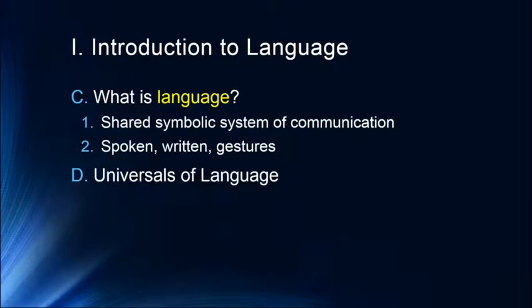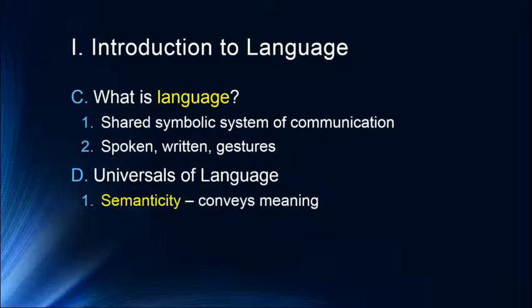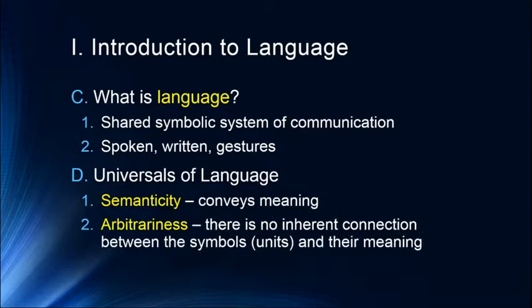Each language has some universality to it. All language has what we call semanticity — that is, it conveys some sort of meaning. Language is designed to intentionally convey meaning from one person to another. Language is also inherently arbitrary; there is no inherent connection between the symbols and their meaning. As Shakespeare famously said, a rose by any other name would smell as sweet. So 'rose' is simply arbitrary, and anyone who has studied multiple languages knows there's really no rhyme or reason to the way language is constructed.